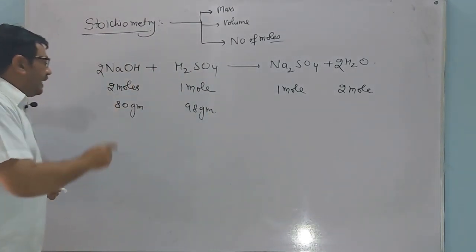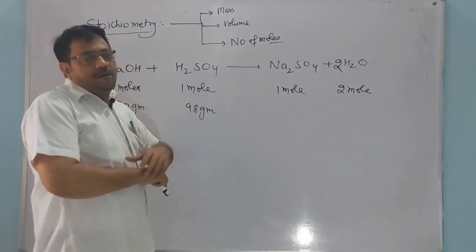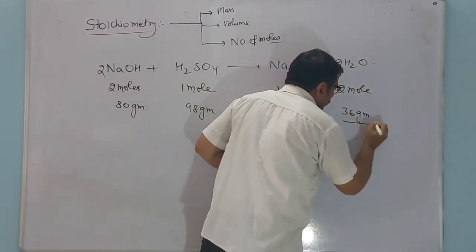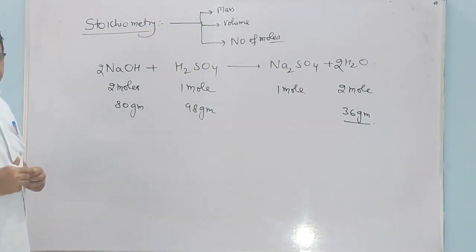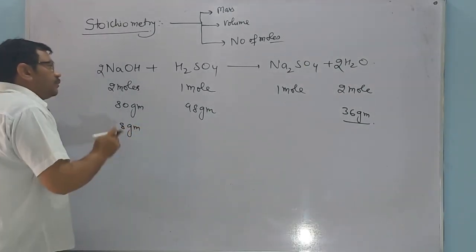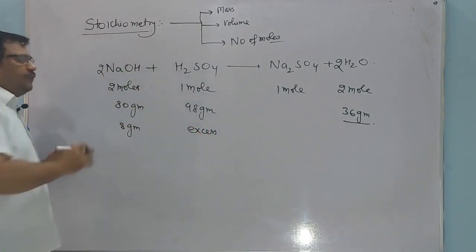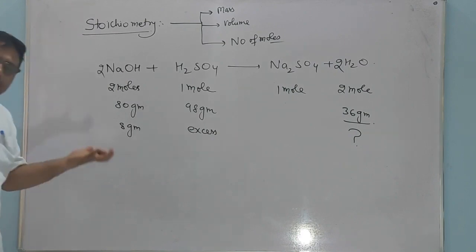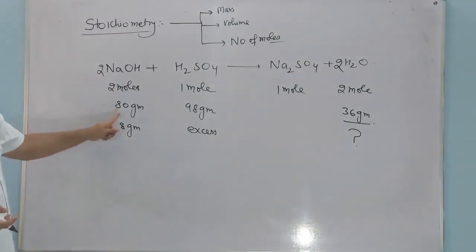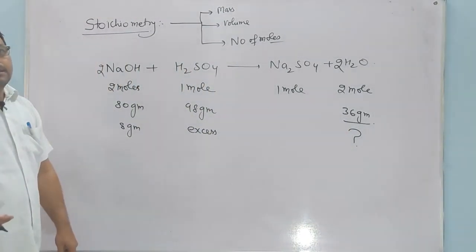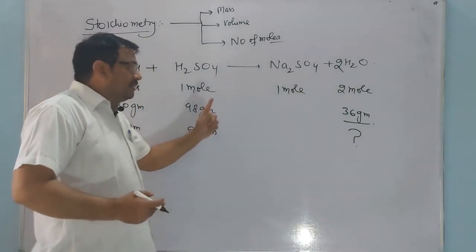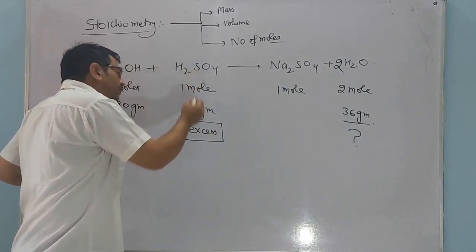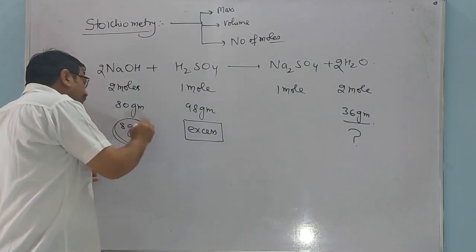अगर 80 gram sodium hydroxide को 98 gram sulfuric acid से react कराएं तो 36 gram water बनकर तयार होगा (18 × 2 = 36)। लेकिन अगर 8 gram sodium hydroxide को excess of sulfuric acid के साथ react करवाएं तो कितना water बनेगा? Unit method से: 80 gram NaOH gives 36 gram water, तो 8 gram NaOH with excess H2SO4 — यहाँ 8 gram NaOH पूरी तरह react कर जाएगा।